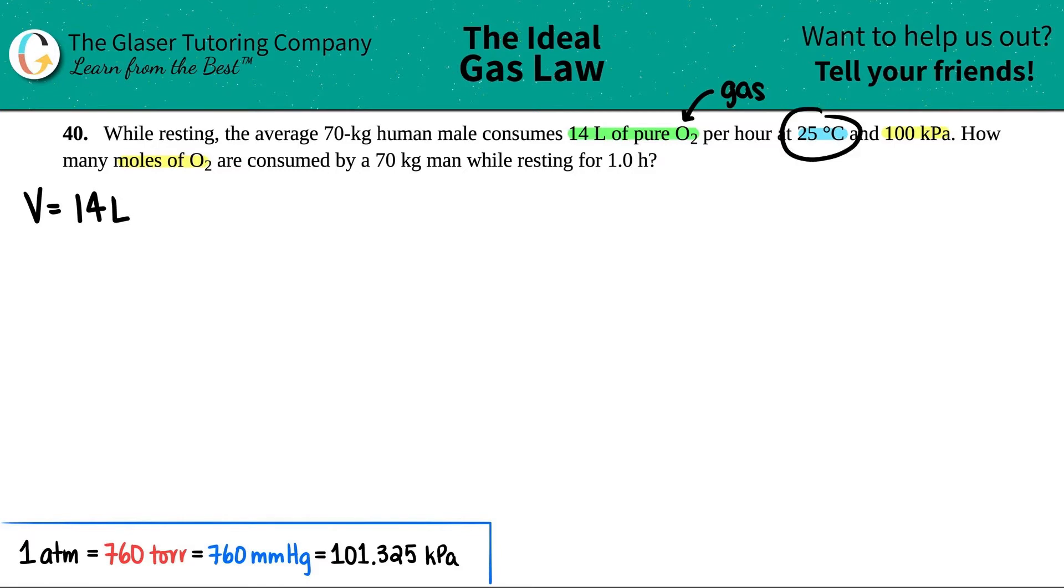They told us that the temperature that the male is consuming, the oxygen is at 25 degrees Celsius. So I have a temperature, 25 degrees Celsius and 100 kilopascals. Remember kilopascals, kPa is a type of pressure. So P equals 100 kilopascals. And they're asking for how many moles of the gas, how many moles of O2. We know that moles is n, so question mark.